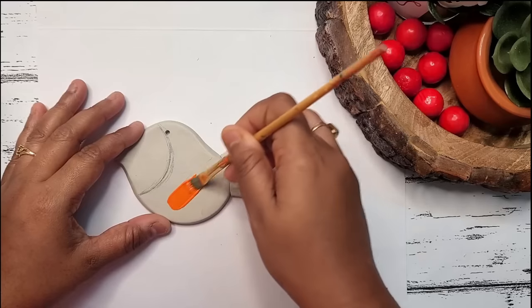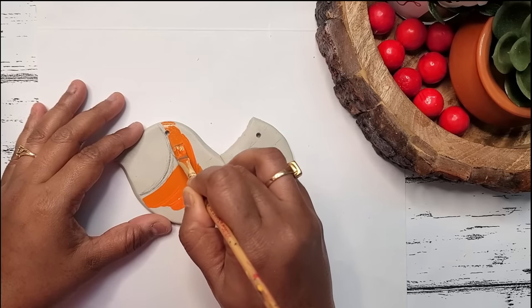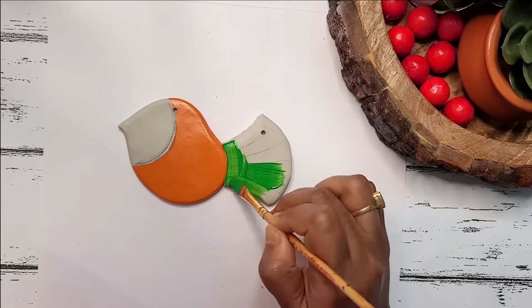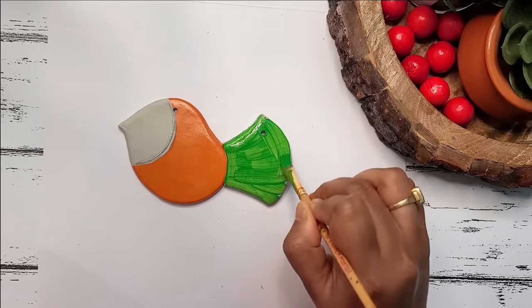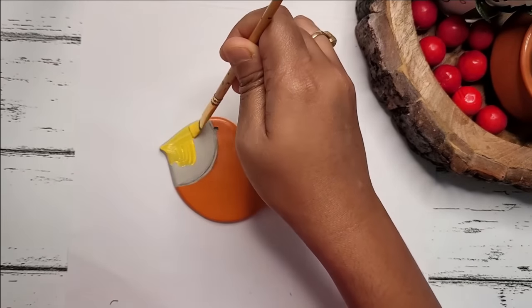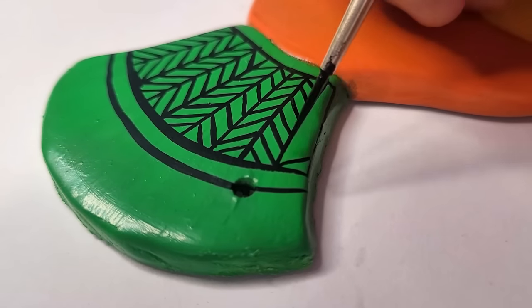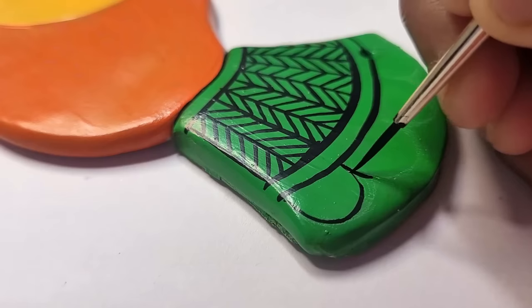Applying orange color. Applying green color using flat brush number four. I'll be applying two layers of each color on all the areas to avoid patches. Applying yellow color. Here I'm using brush number one to add some geometrical pattern on the tail part.